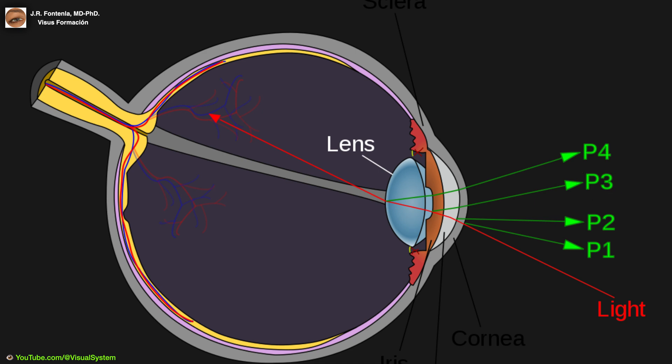The first and fourth Purkinje images are used by some eye trackers, devices to measure the position of an eye. The first and fourth Purkinje images move together through exactly the same distance.